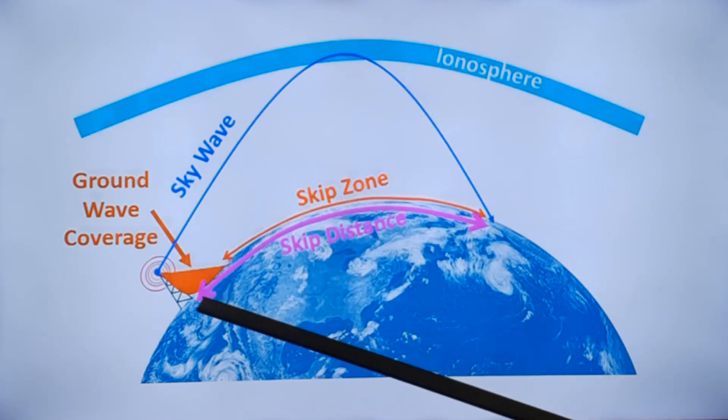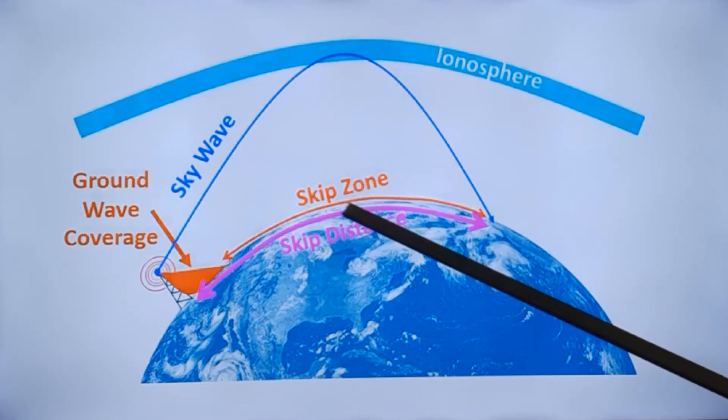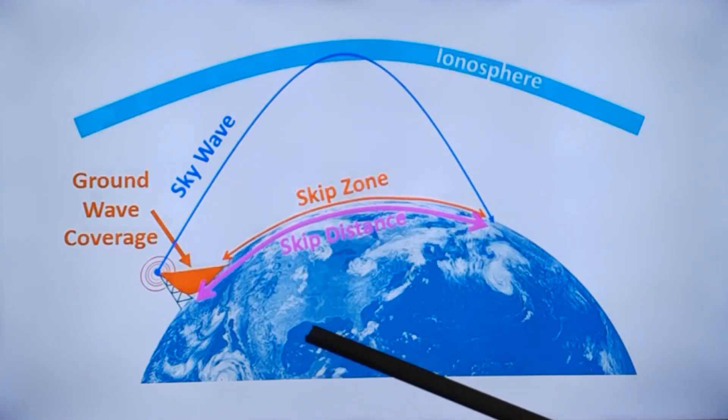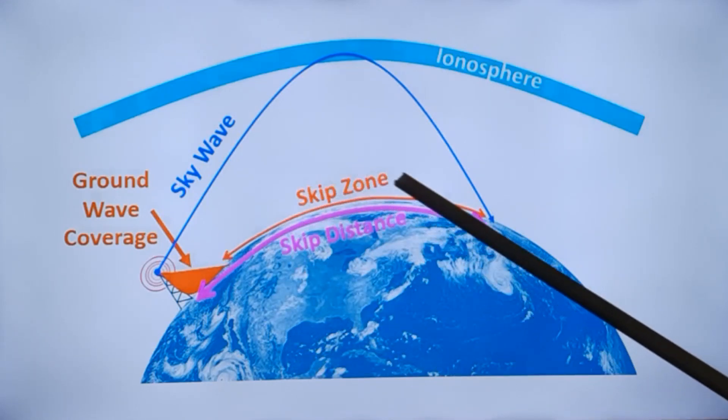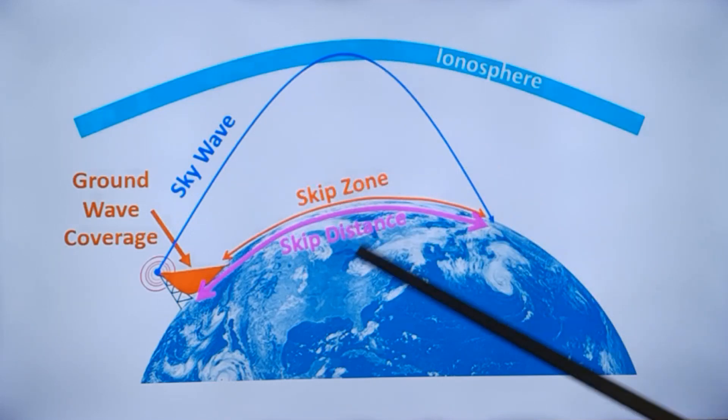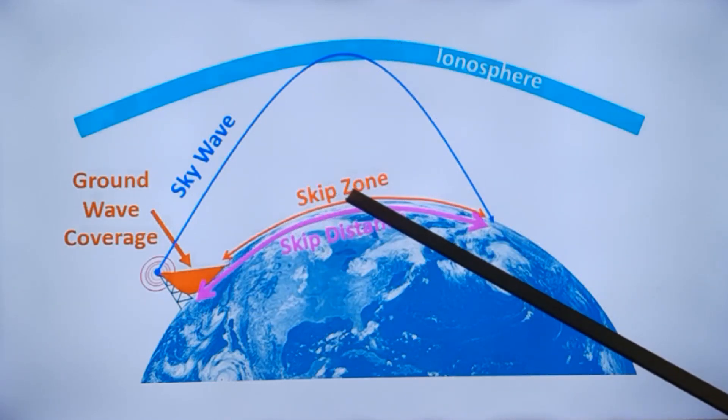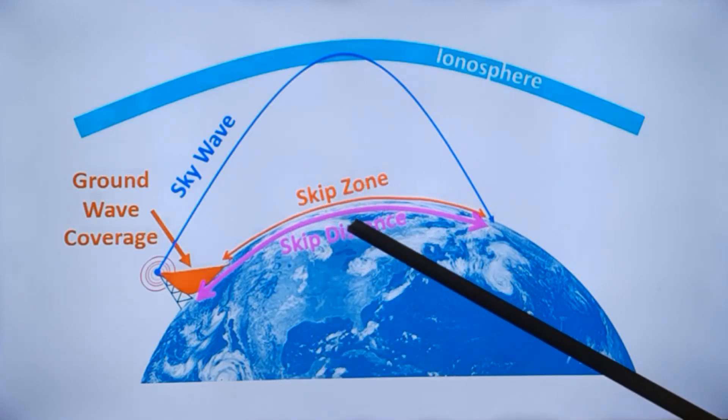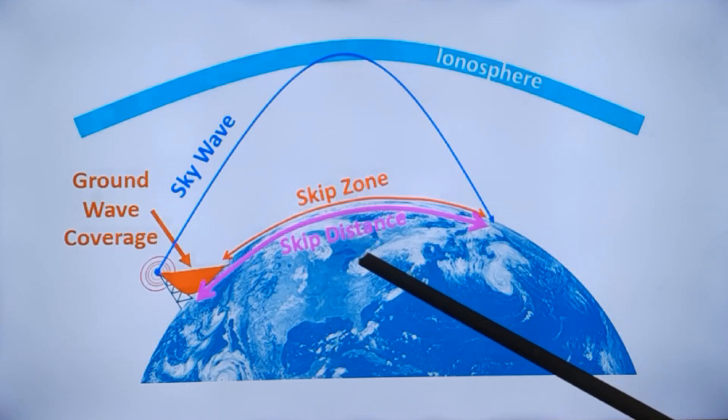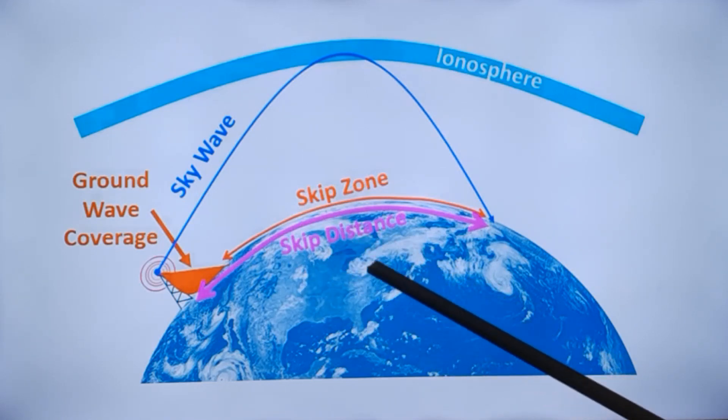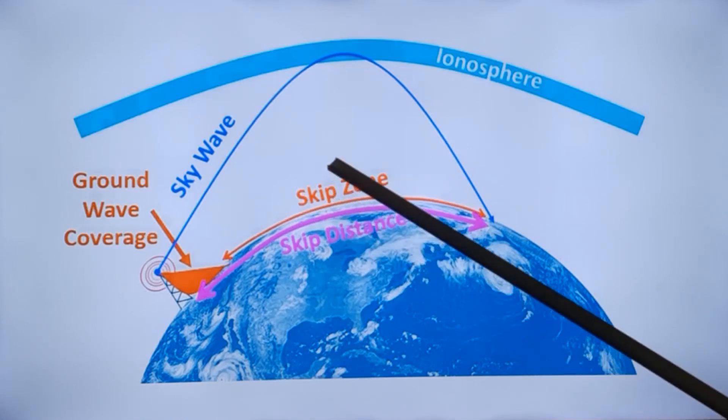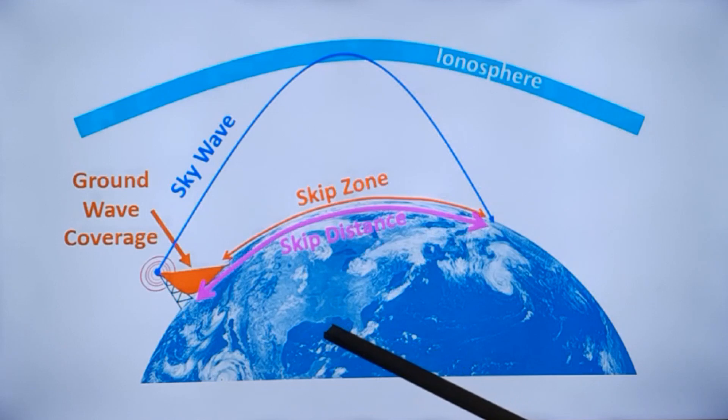For example, for a 7 MHz wave, maybe it will come down here, and for 14 MHz it will have a higher hop. That is why you would have noticed that you will hear long distance stations better on 14 MHz and short distance stations better on 7 MHz. In amateur radio, 7 MHz is most popular for short distance communications while 14 MHz and higher bands are popular for long distance communications. That is because of this skip zone and skip distance.